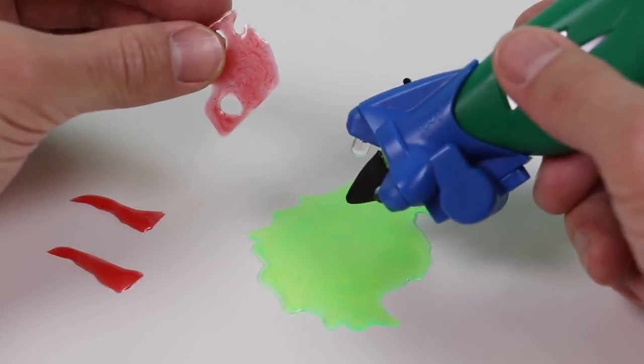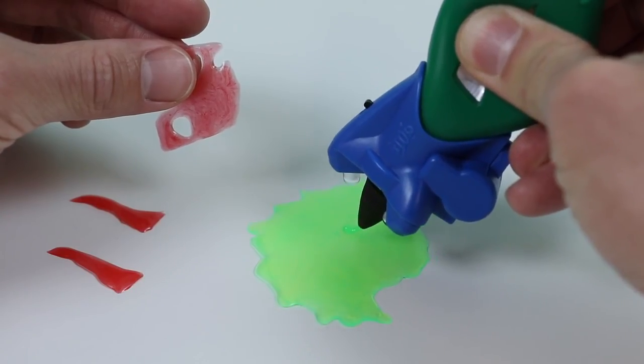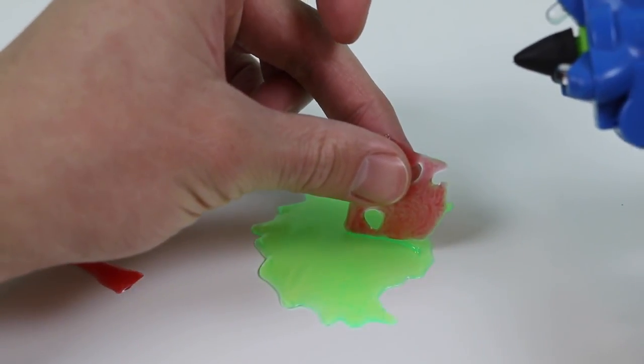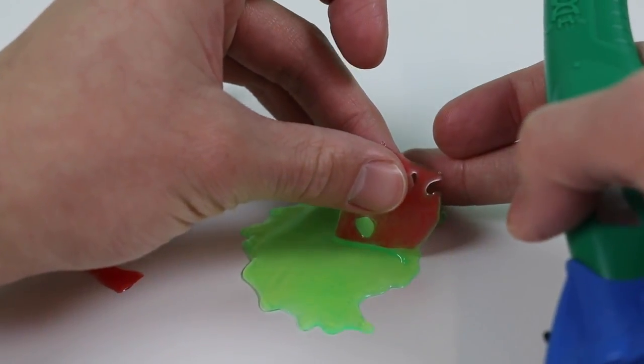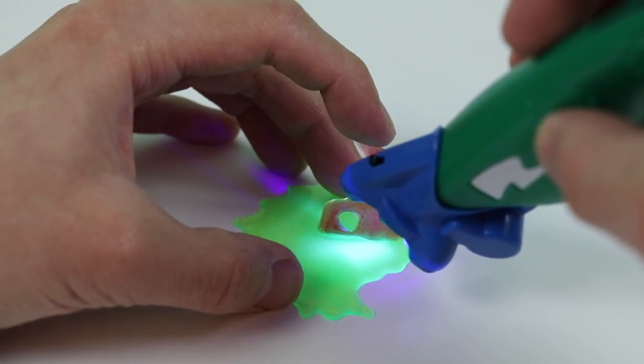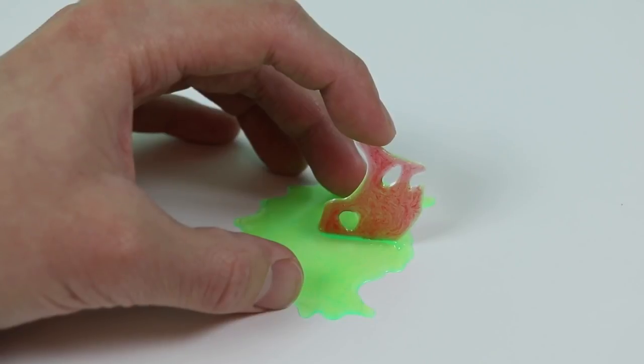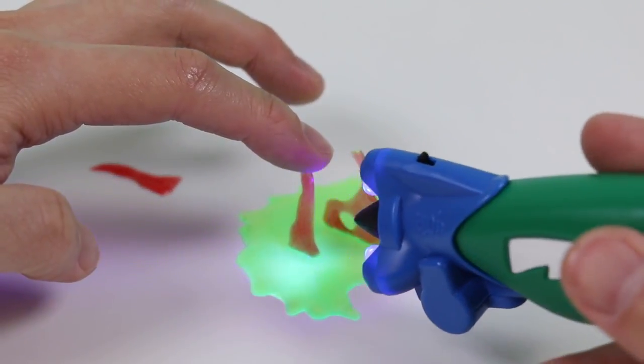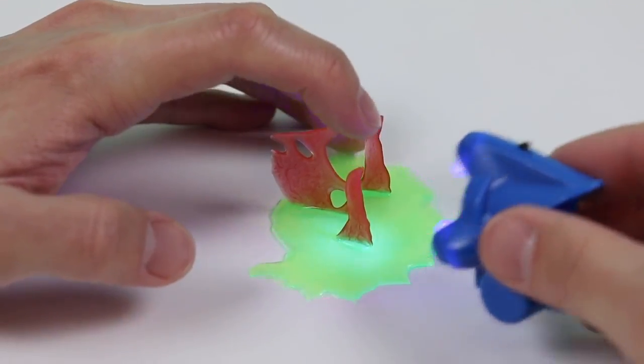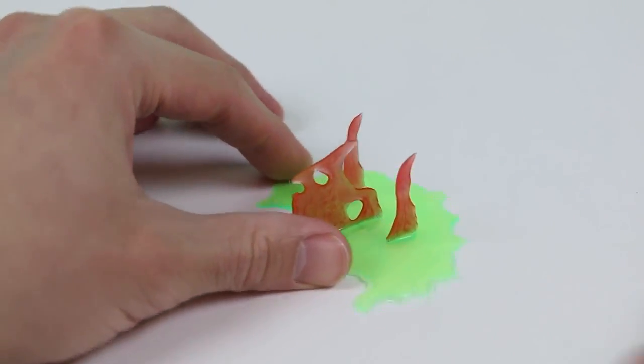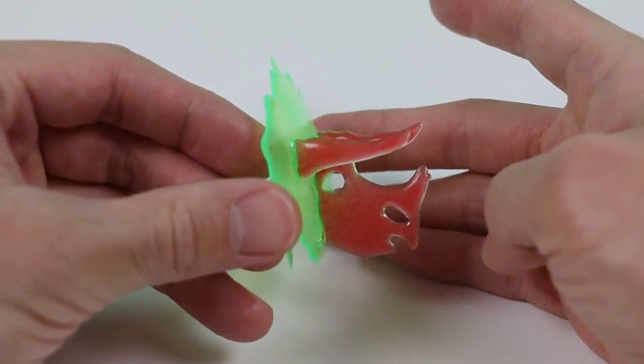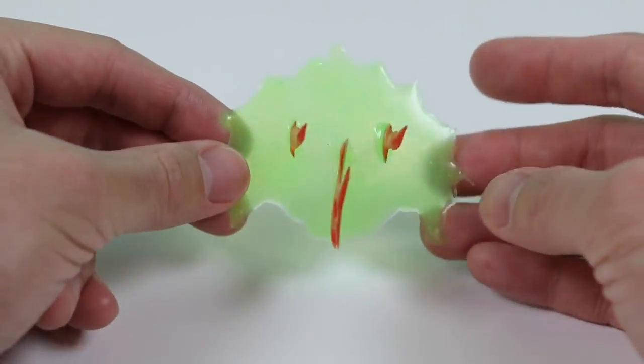Start by attaching the head to the neck frill. Now attach the horns. Whoa! This looks so cool! I can't wait to see the finished product!